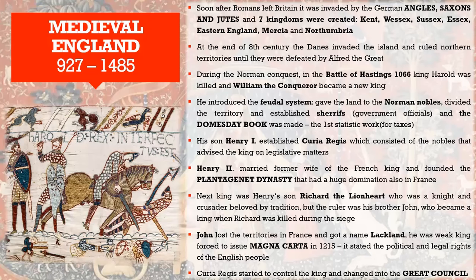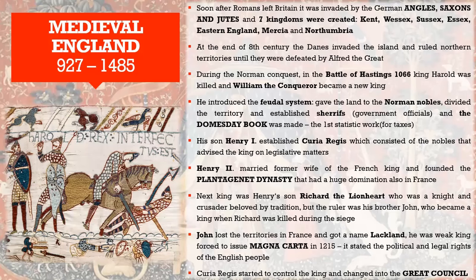The Germanic tribes that formed medieval England were the Angles, Saxons, and Jutes — these were the three tribes. They were of the same Germanic origin but with little differences. By first look, you can see that one tribe gave its name to the country: the Angles. England was named after them because they especially inhabited that area and were the most numerous, but Saxons and Jutes came as well.